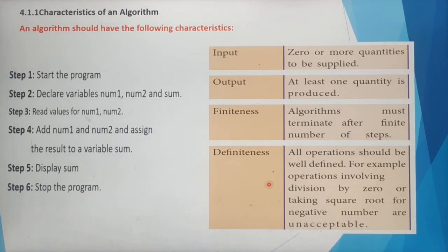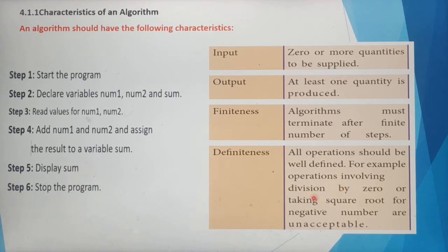The fourth characteristic is definiteness. Definiteness means all operations should be well defined. Whatever operations you are using in the algorithm, all those must be defined in a proper manner. For example, operations like division by zero or taking the square root of negative numbers are unacceptable and must be avoided.